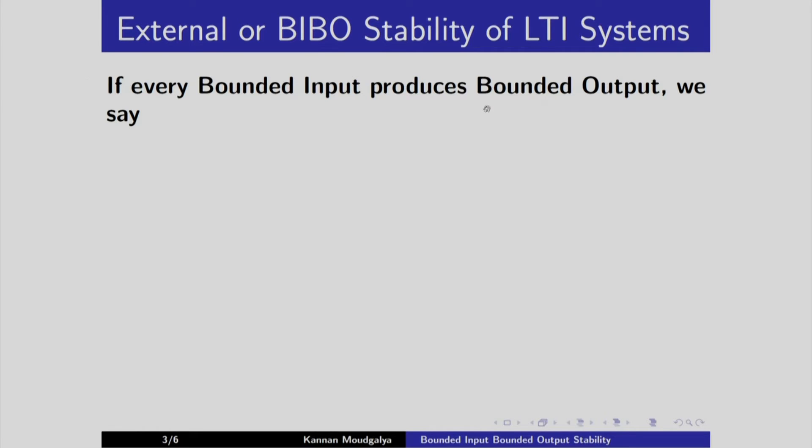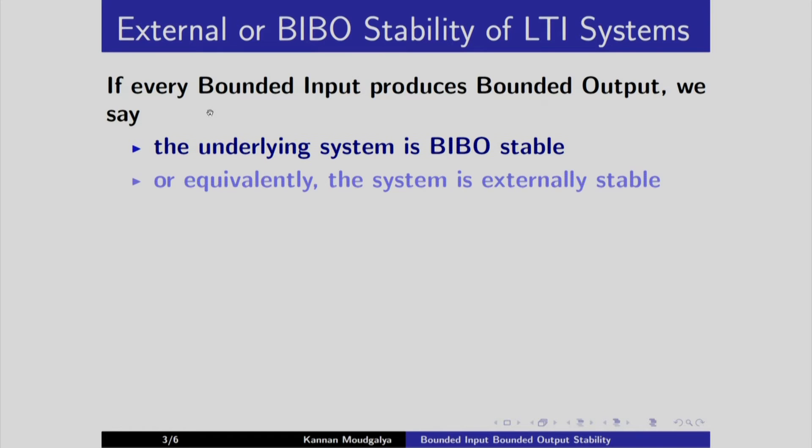If every bounded input produces bounded output, we say the underlying system is BIBO stable or equivalently, the system is externally stable.